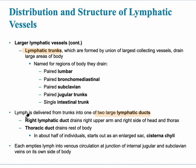The two ducts are called the right lymphatic duct and the thoracic duct. The right lymphatic duct drains fluid from the right upper arm and the right side of the head and thorax. The thoracic duct drains lymph from the rest of the body.